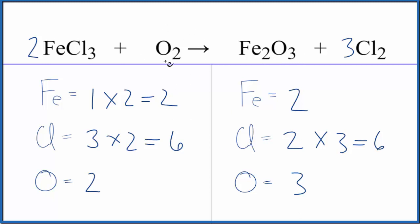So you could say 2 times some number is going to give us 3. 2 times 3 over 2, these will cancel out, that would give us 3. So we could put 3 over 2 as our coefficient.